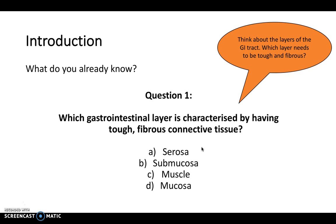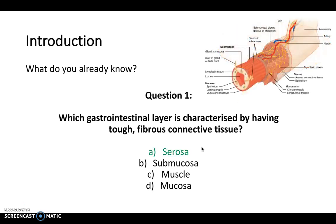If you try to work out what's on the outside of the GI layers, you'd know that it's the serosa. The serosa needs to be tough and fibrous and made up of connective tissue because it is the outer layer and it's protective.